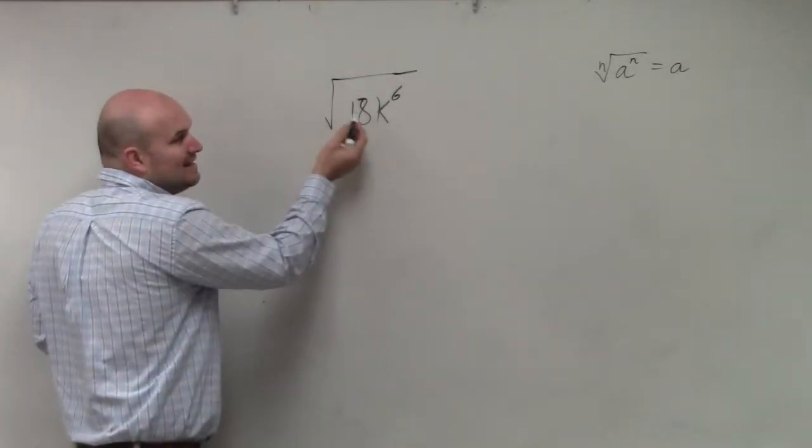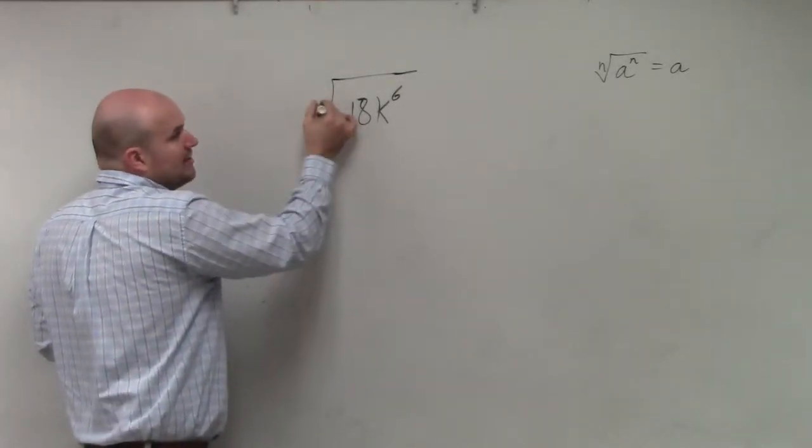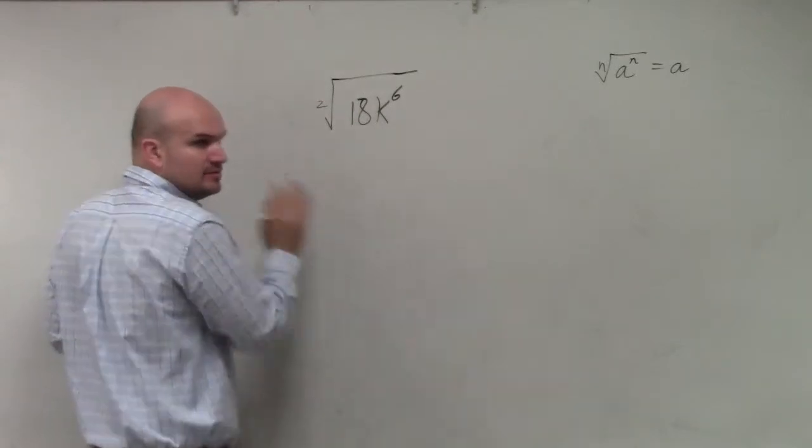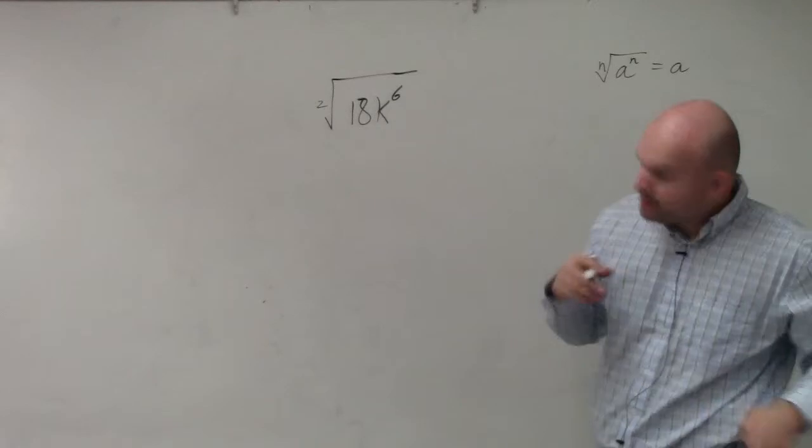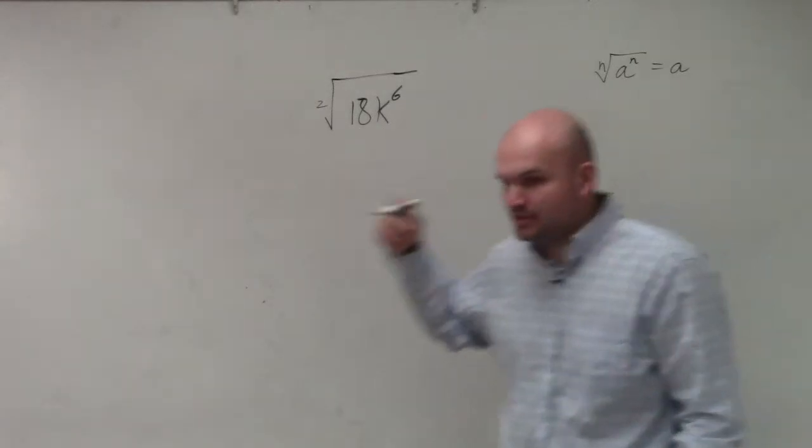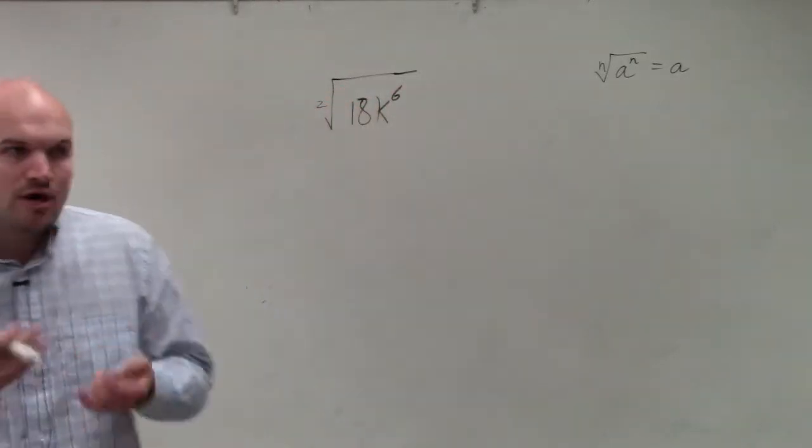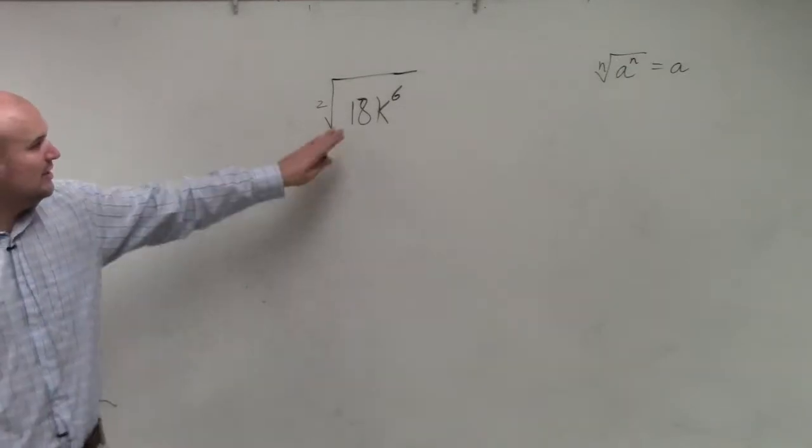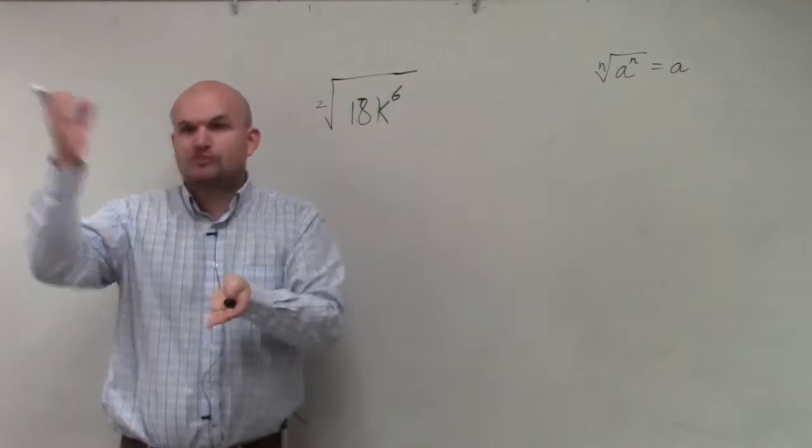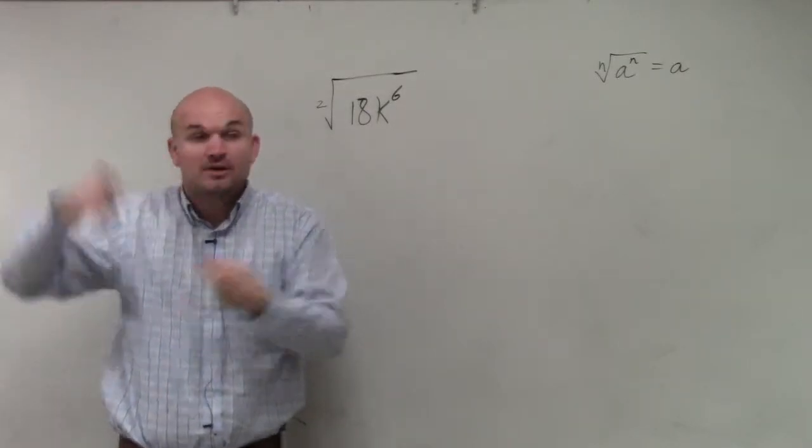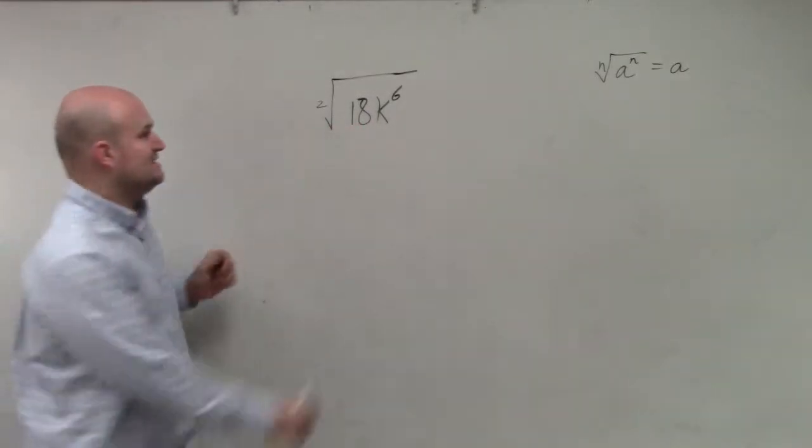Well, unfortunately, 18, I cannot rewrite. Now remember, if there's no number there, we assume that it's 2. So the problem with this one is when you take a look at this, I cannot write 18 or a number raised to the power 2 that gives me 18. However, there is square numbers. Square numbers are numbers you can square, so numbers you can raise to the power 2. There is square numbers that divide into 18.